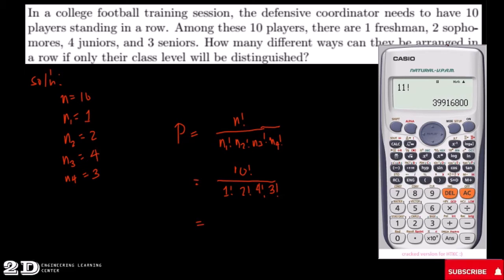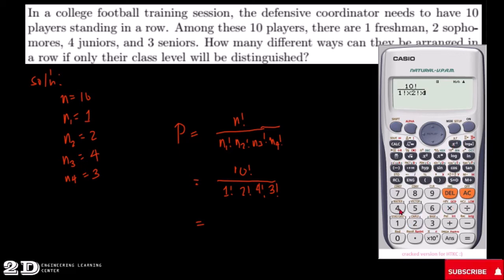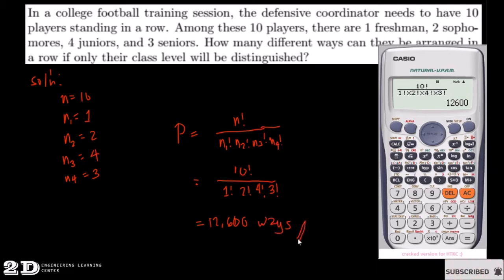Using our calculator, we compute 10! divided by (1! × 2! × 4! × 3!), and the result is 12,600. So there are 12,600 arrangements or ways, and this will be your answer.